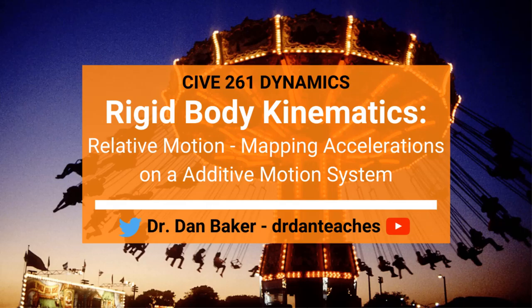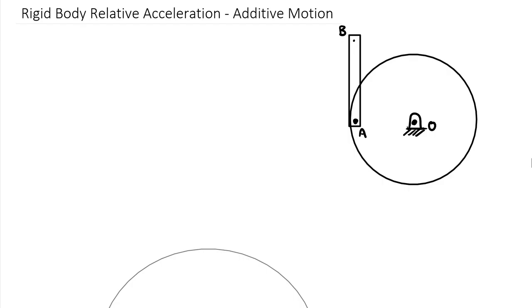Hello students of Dynamics, this is Dr. Dan Baker with another video talking about rigid body relative acceleration. Today we're going to look at a case called additive motion. For those curious about the differences between four-bar linkages and additive motion, search for additive motion in my playlists and you'll find a video that contrasts the two with interactives. Today I'm going to look at the application of this idea on a relative acceleration problem — drawing out vectors, showing the equation, and mapping everything out.